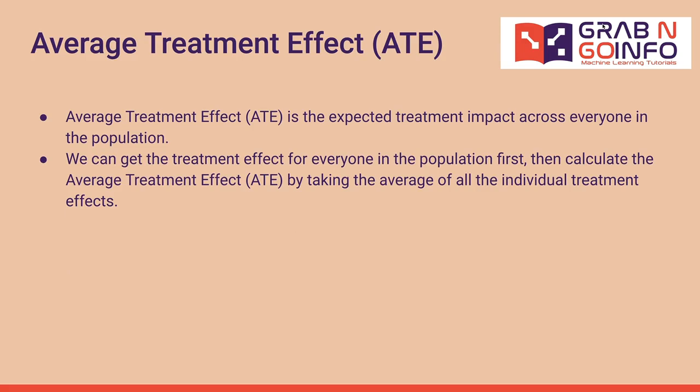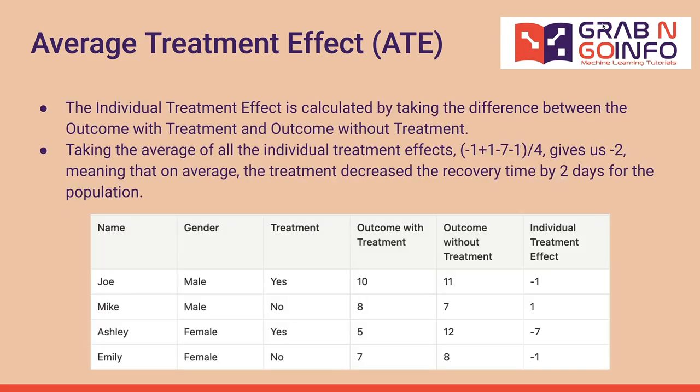Average Treatment Effect is the expected treatment impact across everyone in the population. We can get the treatment effect for everyone in the population first, then calculate the average treatment effect by taking the average of all the individual treatment effects. The individual treatment effect is calculated by taking the difference between the outcome with treatment and outcome without treatment. Taking the average of all the individual treatment effects gives us minus 2, meaning that on average, the treatment decreased the recovery time by 2 days for the population.